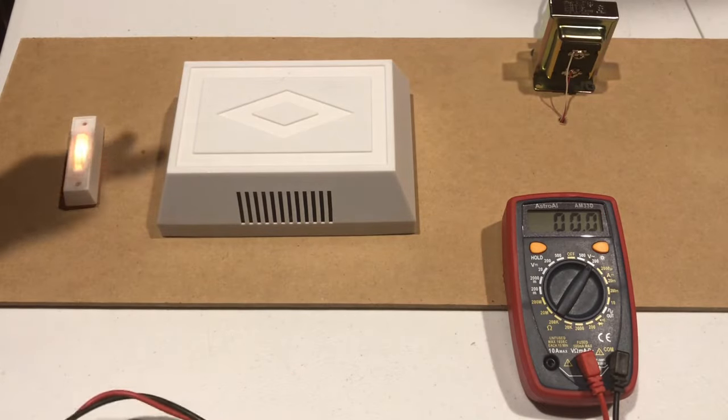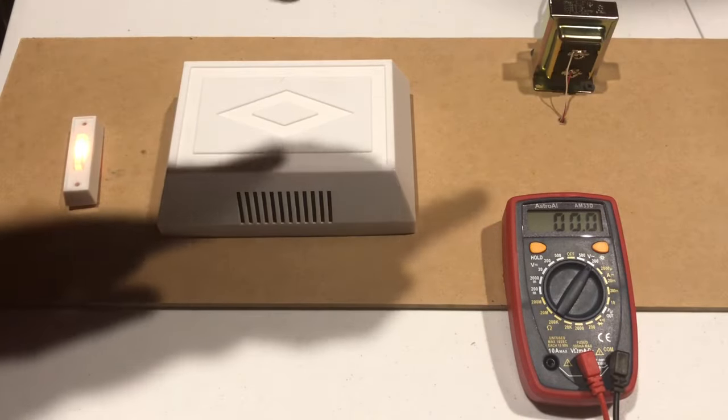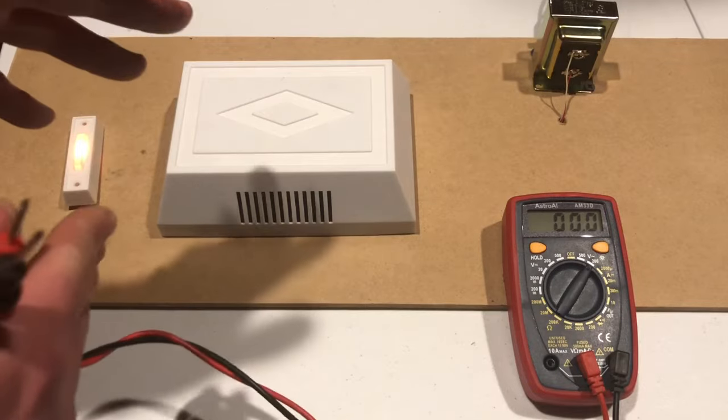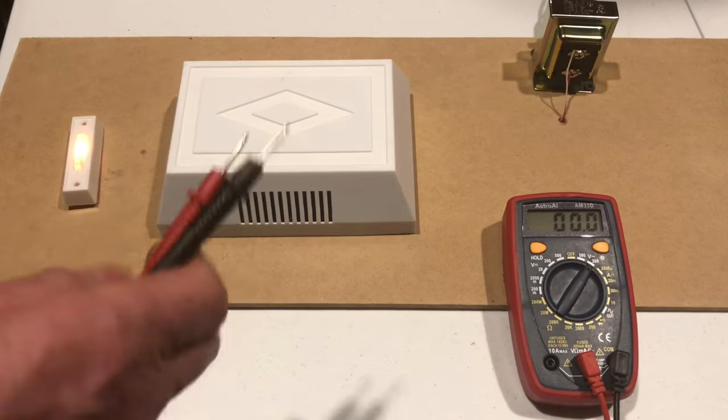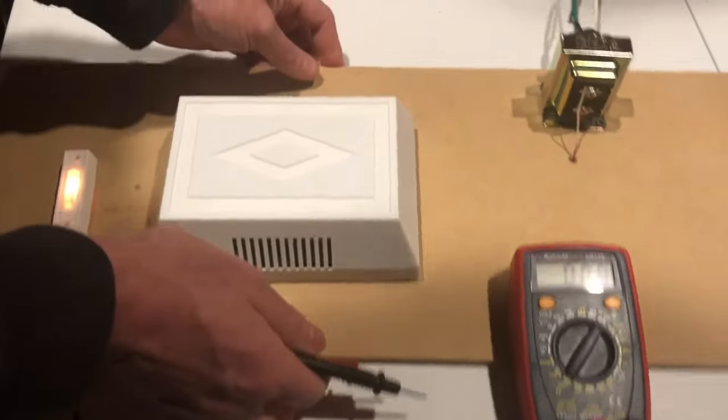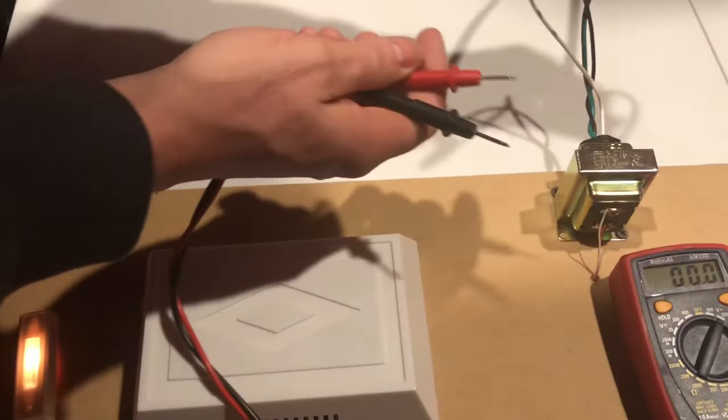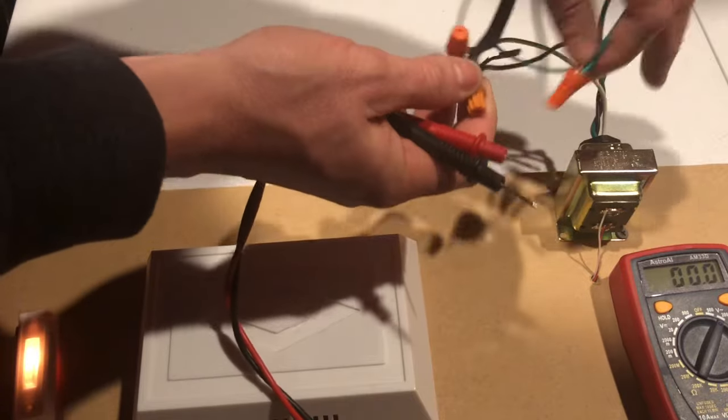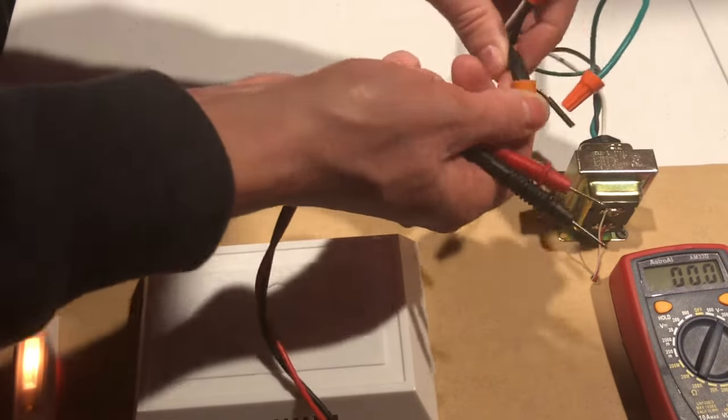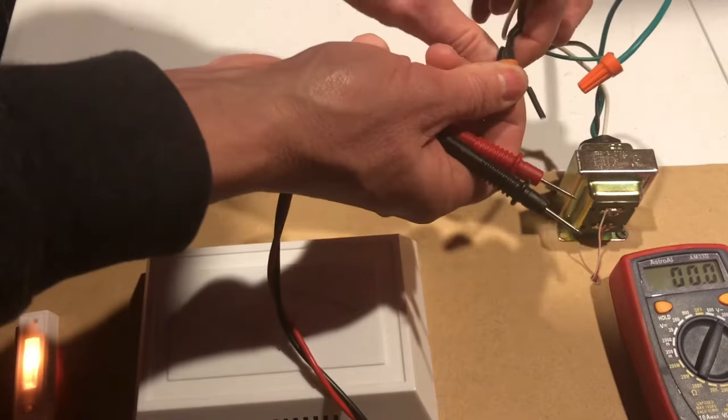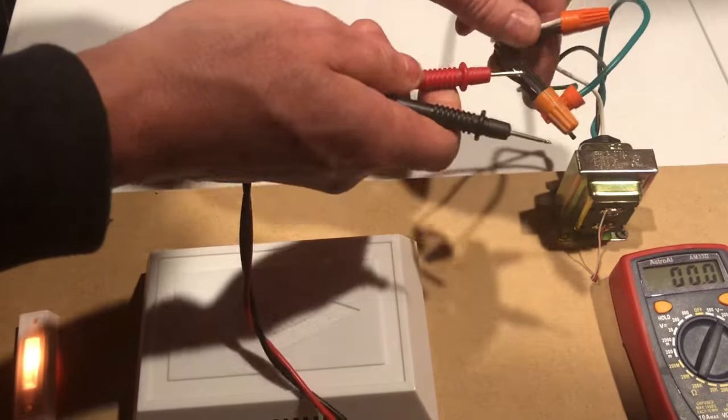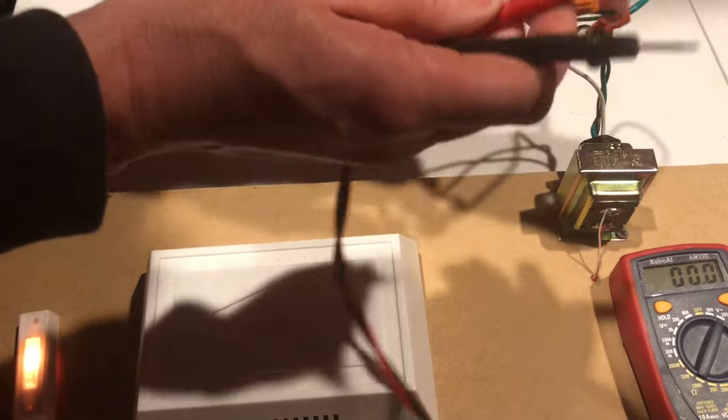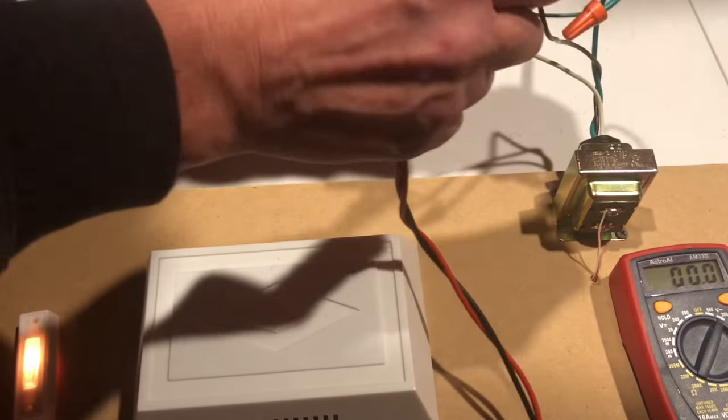Then we know that we've got a power issue going to the transformer or the transformer is bad itself. And so how we're going to test that is we're going to test the power coming to the transformer. So green is ground, white is neutral, and black is line voltage, or it's the hot side. So I'm going to stick my test lead in the wire nut.